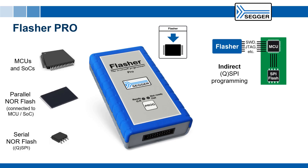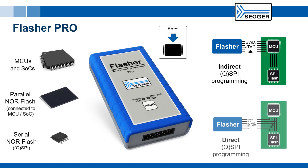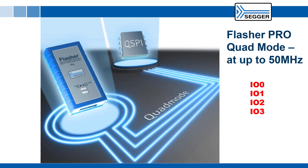QSPI Flash memories can be programmed indirectly via the microcontroller or SoC, or directly by connecting straight to the pins of the QSPI Flash. The latest generation of the Cigar Flasher Pro is able to program QSPI Flash in Quad mode at up to 50 MHz, maximizing programming speed for production environments.